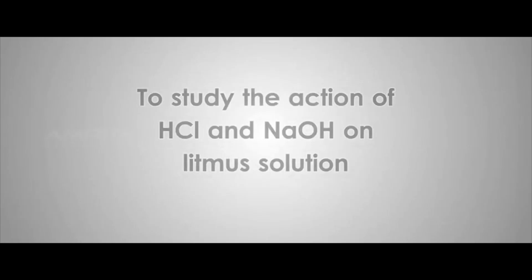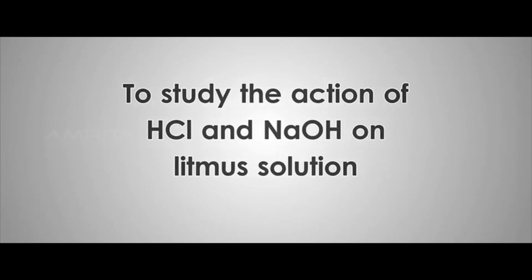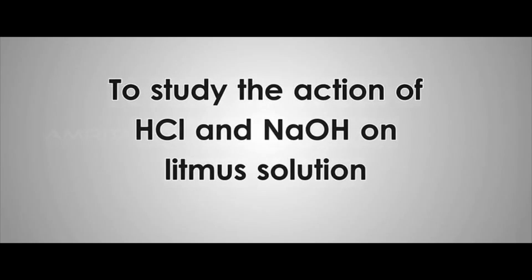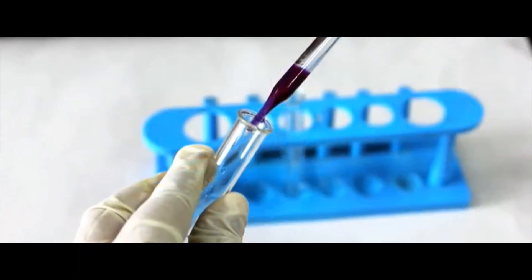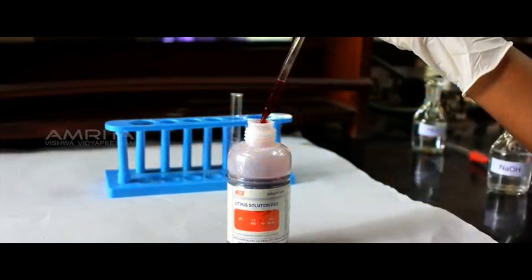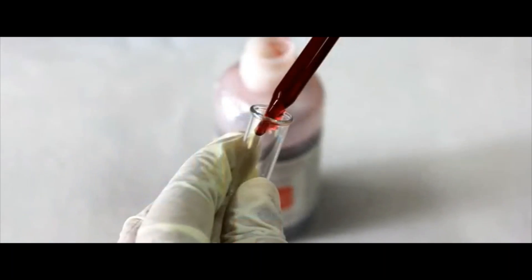Procedure: To study the action of HCl and NaOH on litmus solution, add a few drops of blue litmus solution in one test tube and red litmus solution in another test tube.